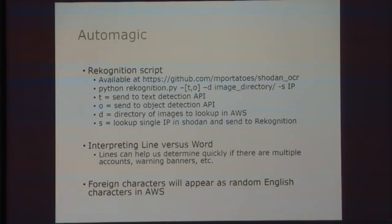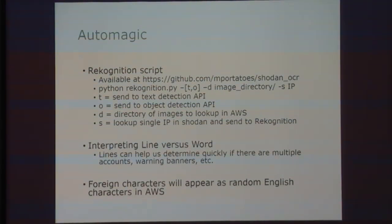This is all at my GitHub repo. Last time I did a live demo I got uber burned, so I'm not going to do a live demo, but I will show you some output. Really super simple — we've just got some flags for text detection, or sending it to the object detection API, or using a directory to look up images, or just using a single IP address to go to Shodan and send it directly to AWS. One thing I don't like about AWS is it doesn't do a good job with foreign character recognition — Google Cloud Vision does a really awesome job with that.